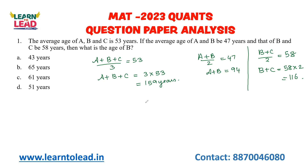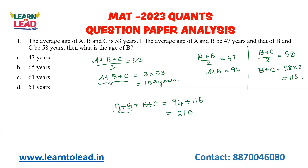We know that the total age of A, B and C is 159 years. If I add the age of A and B, plus the age of B and C, that is 94 plus 116 = 210 years. For A, B and C, we substitute the total age as 159 plus B. So B is equal to 210 minus 159, which is 51 years.